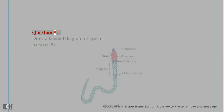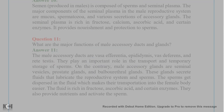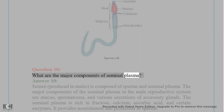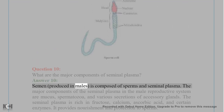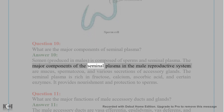Question 9: Draw a labeled diagram of sperm. Question 10: What are the major components of seminal plasma? Answer 10: Semen, produced in males, is composed of sperms and seminal plasma. The major components of the seminal plasma in the male reproductive system are mucus, spermatozoa, and various secretions of accessory glands.